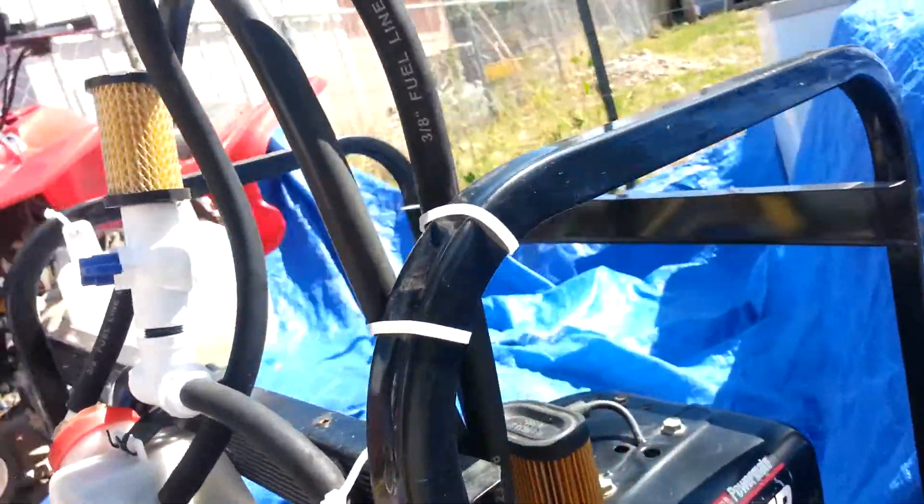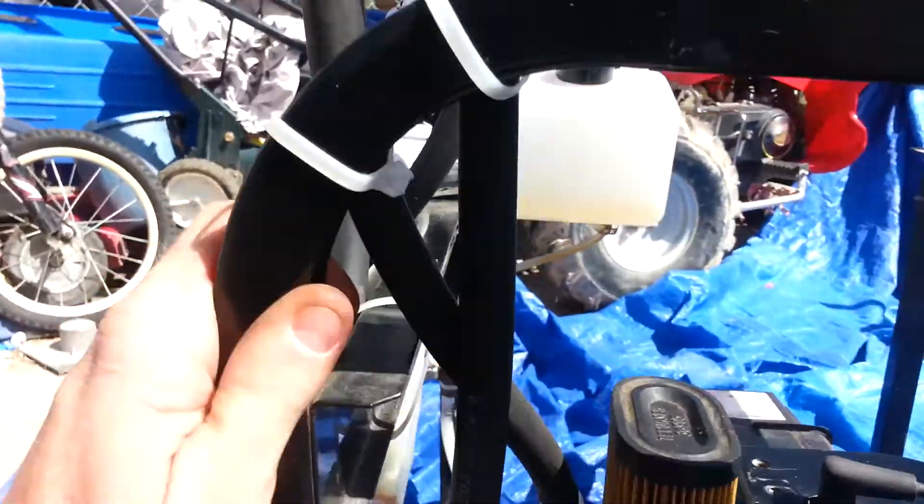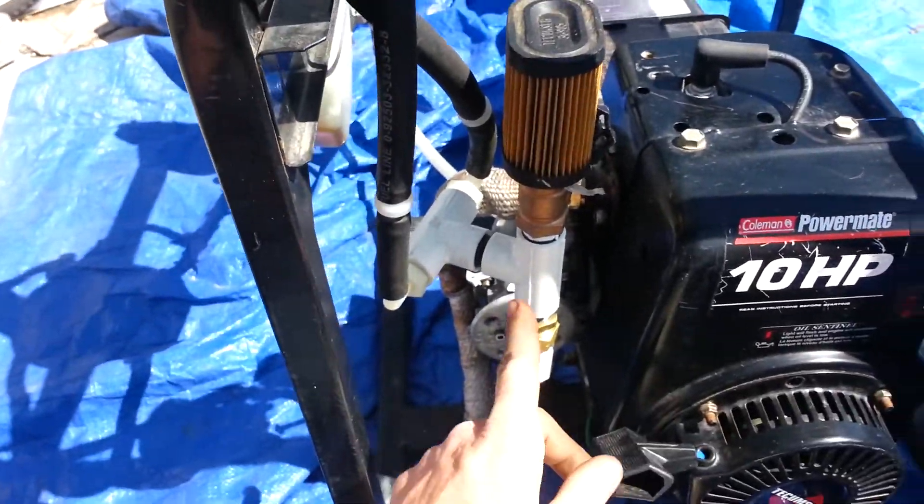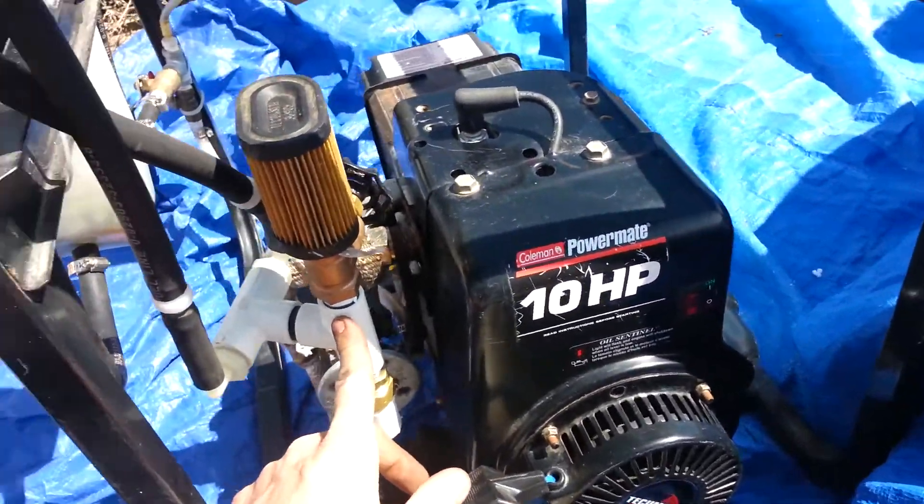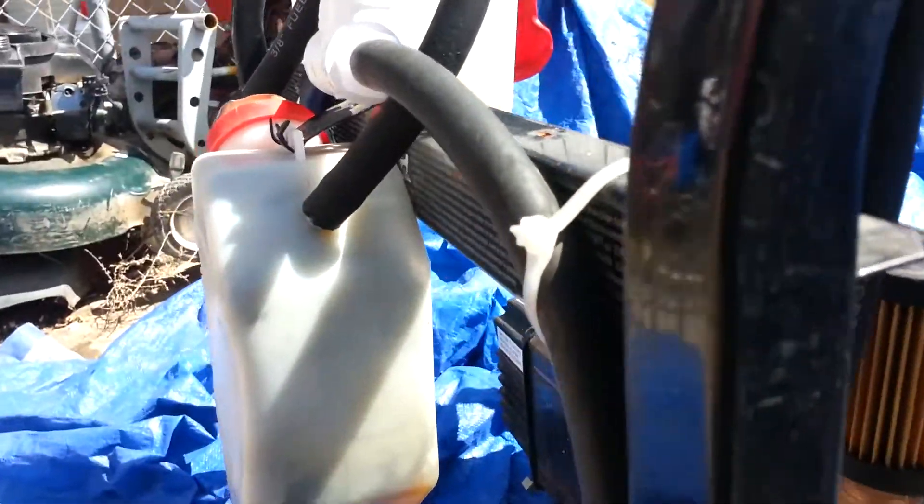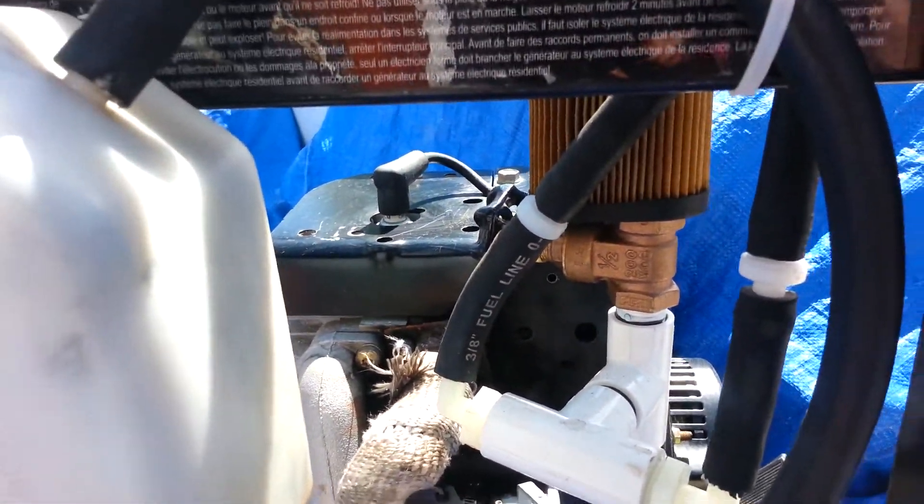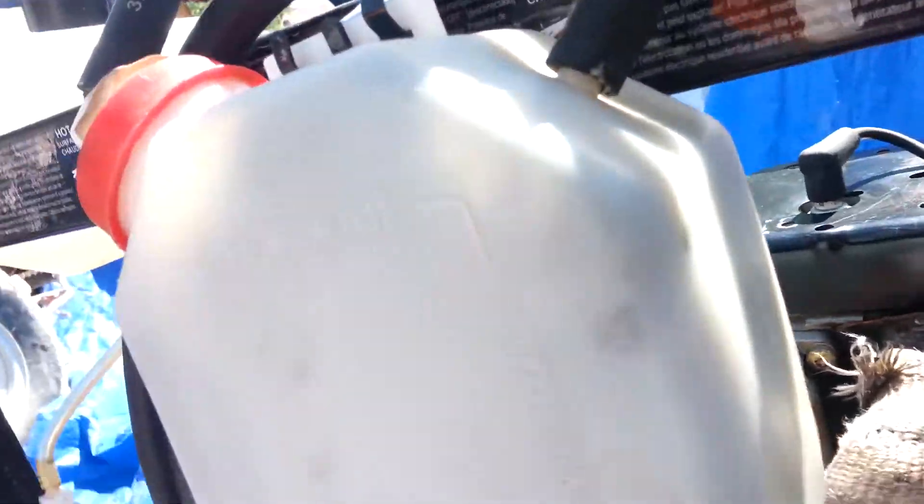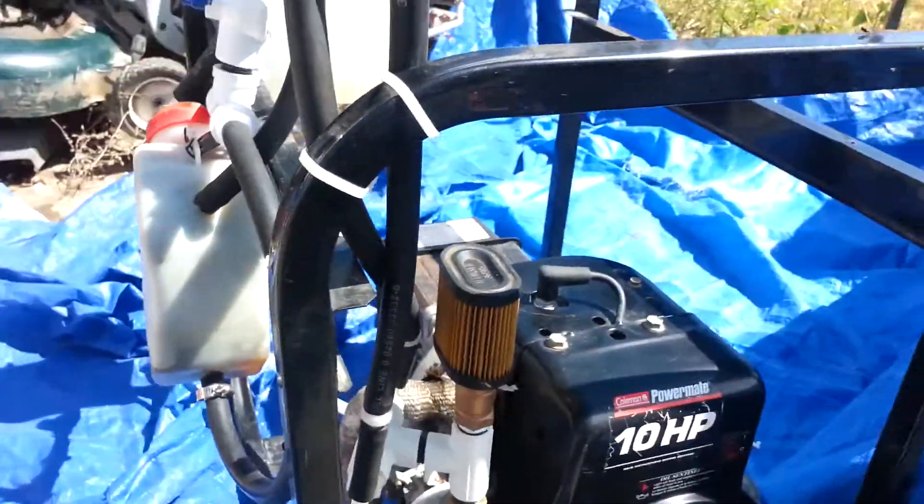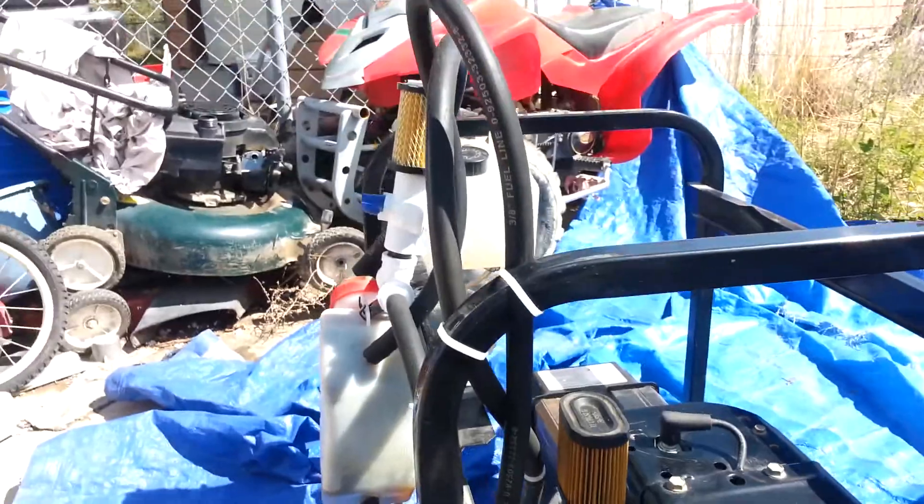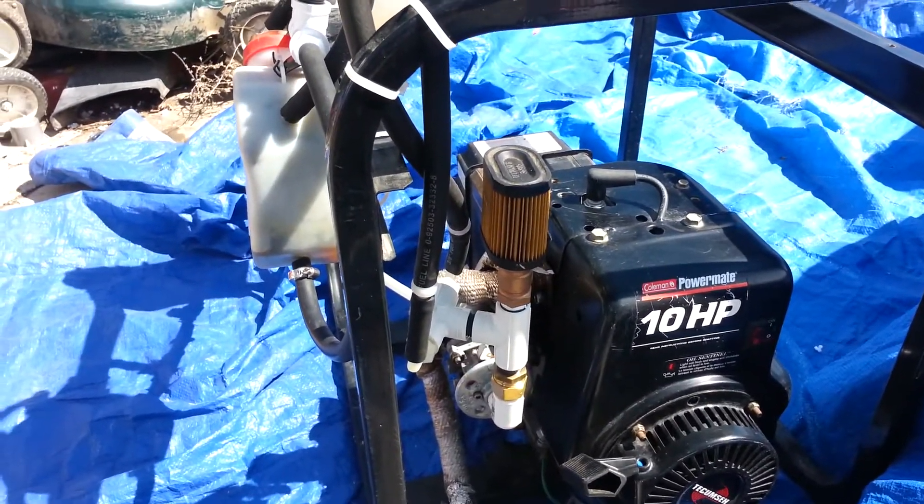I do have one thing that I did not mention is this is a secondary air inlet right here, you can see that right through there. And that's my secondary air inlet to control the air to fuel ratio, and I do have an air filter on that as well. So all the air is being filtered in this system.